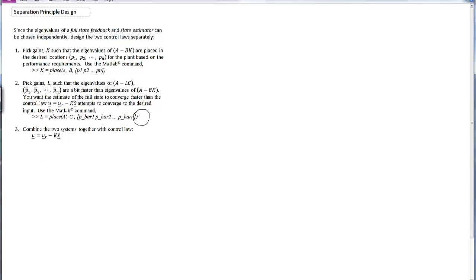In the third step, we combine these two systems together with the control law U equals U sub R minus Kx hat. In block diagram form, U sub R comes in, we generate the error and feed that value into the plant. So this is A, B, C, and D in state-space form.